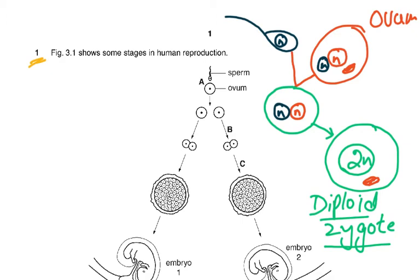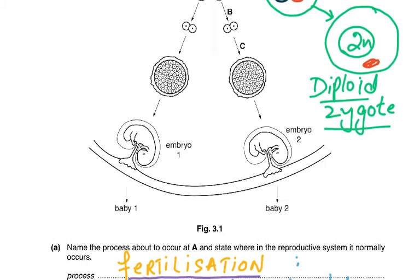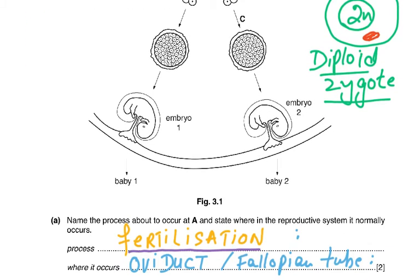The cytoplasm of the zygote is the cytoplasm of the ovum, and all the organelles have come from the ovum. Now continuing with the question: there is one zygote that has divided into two different human beings — baby one and baby two.